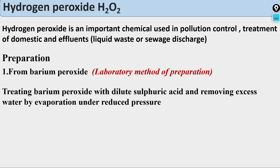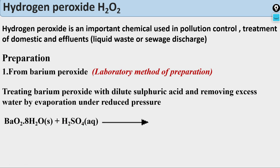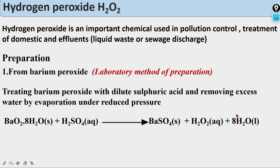We reduce the pressure and evaporate the water molecules formed, under reduced pressure. Reduced pressure is used because if the pressure is high, H₂O₂ would also evaporate. So we reduce the pressure. The chemical equation: barium peroxide with 8 water molecules of crystallization in the solid state is treated with dilute H₂SO₄ (aqueous). We get barium sulfate as solid and H₂O₂ in aqueous solution, plus 8 water molecules in liquid state. These water molecules are evaporated using reduced pressure. This is the first/laboratory method of preparation from barium peroxide.